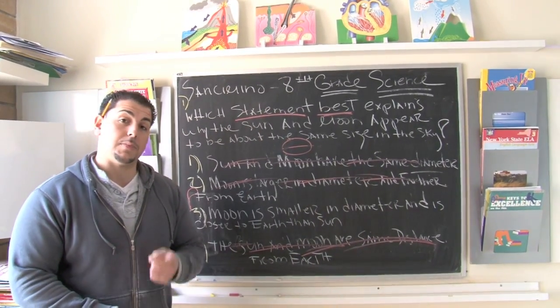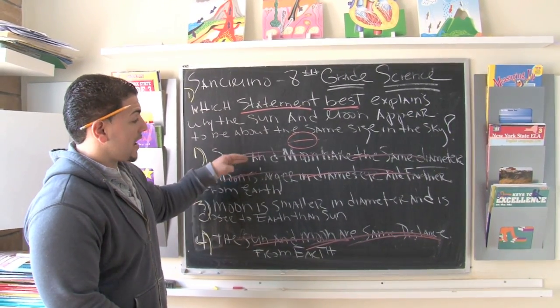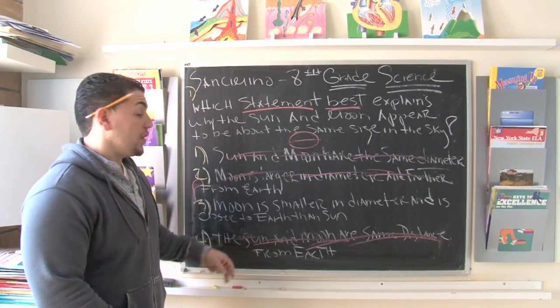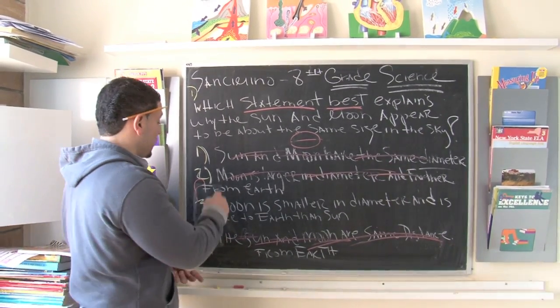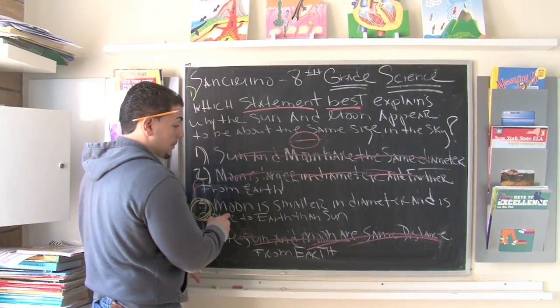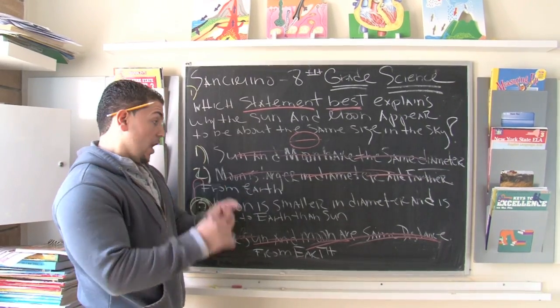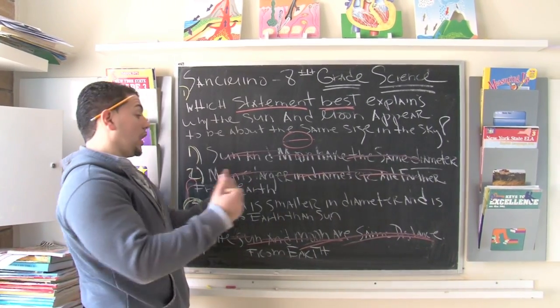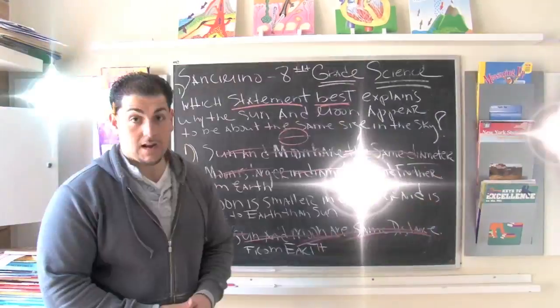We're always looking for the best answer. But the first thing we're looking to do is to scratch out the ones that make no sense. So, the best answer for number one is actually number three. The moon is smaller in diameter and is closer to the earth than the sun. Keep that in mind.